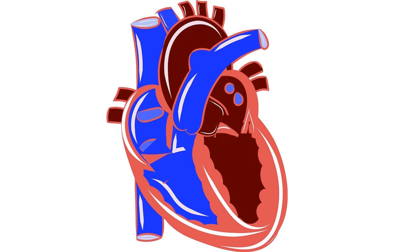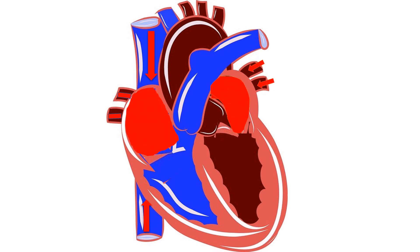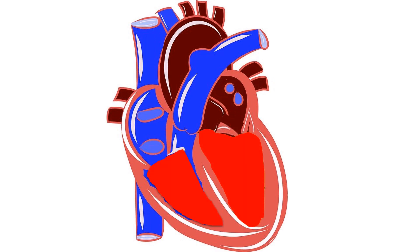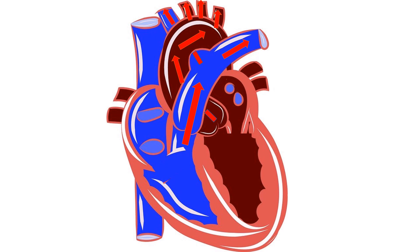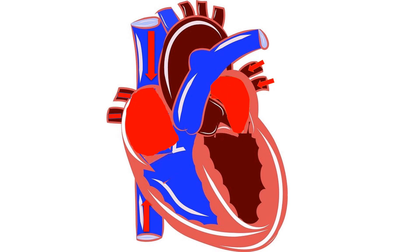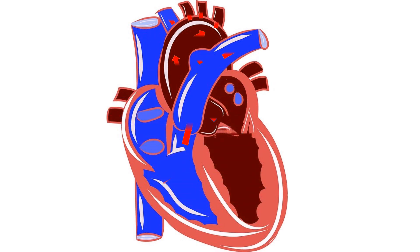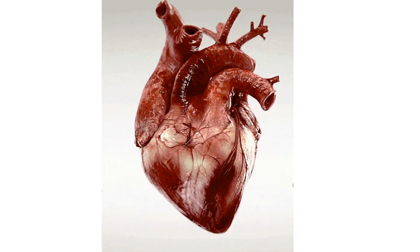When the heart pumps, the deoxygenated and oxygenated blood simultaneously enter the right atrium and the left atrium. Both atria contract together: blood from the right atrium enters the right ventricle, and blood from the left atrium enters the left ventricle. Then both ventricles contract together: blood from the right ventricle enters the pulmonary artery, and blood from the left ventricle enters the aorta. This is how our heart continuously pumps and we feel the heartbeat.